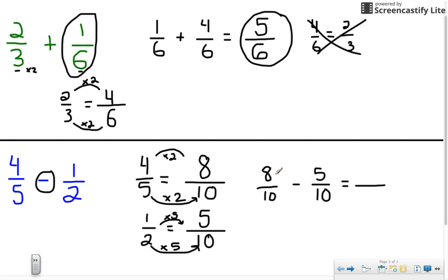Again, when I subtract fractions with like terms, I just subtract my numerator. So eight minus five gives me three and the denominator stays the same. Now again, I don't need to simplify any further. Three is a prime number. It can only be divided by itself and I would just get the same answer. Ten is an even number but three doesn't have anything else it can be divided by. So three-tenths would be my final answer.